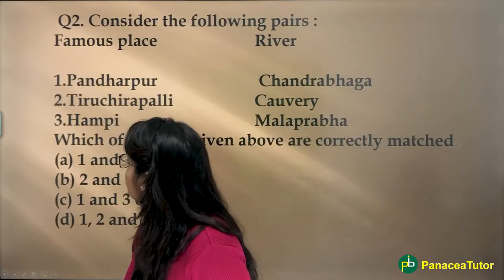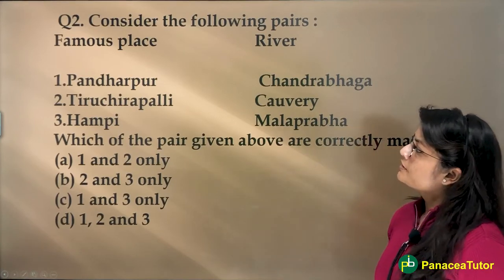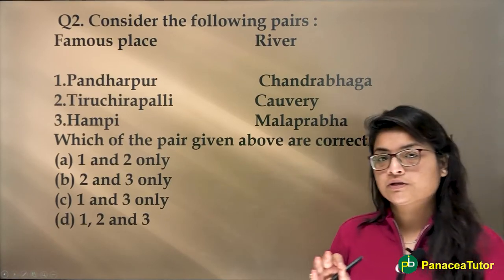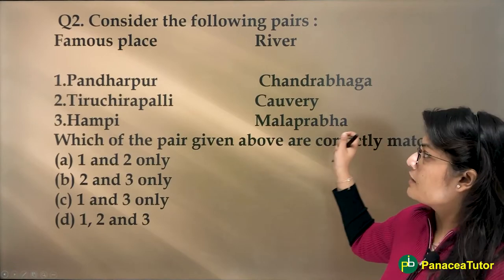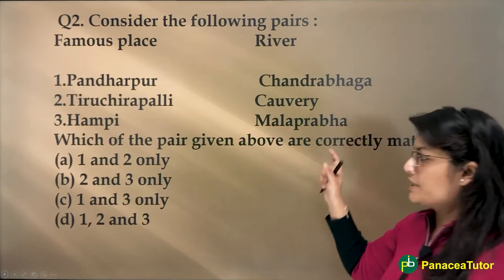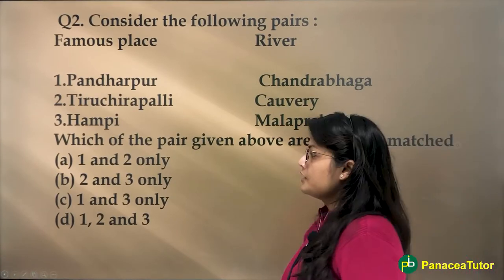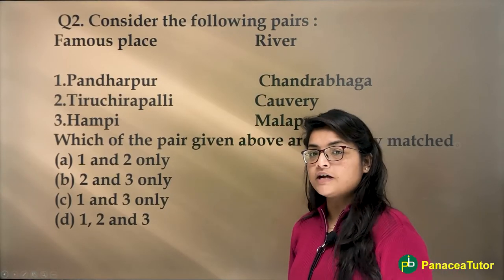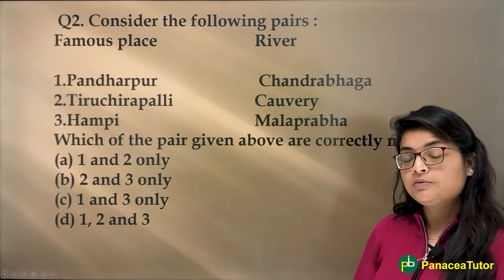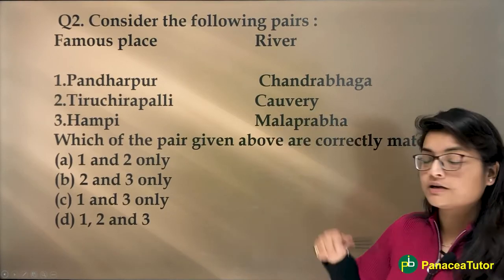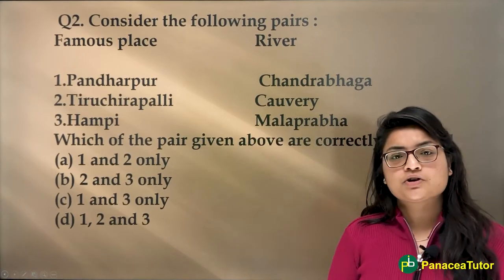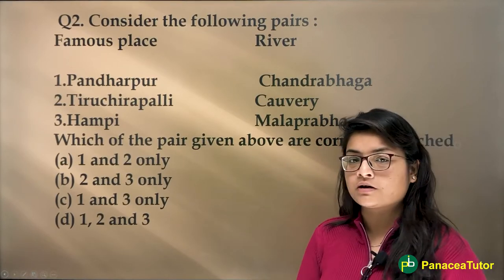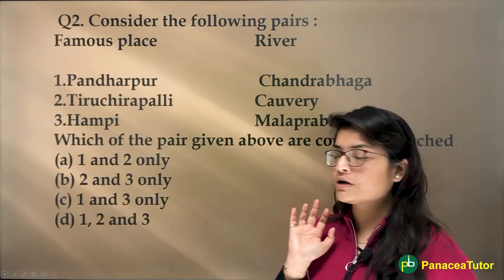Moving on to the next question: consider the following pairs of famous places and rivers. Pandarpur is paired with Chandrabhaga, Tiruchipali with Kaveri, and Hampi with Malprabha. Hampi is your ancient state — if you have read ancient history carefully, you would associate Hampi with a particular state and determine whether the river pairing is correct. Tiruchipali is definitely related to Kaveri river, and Pandarpur is in Maharashtra, related to Chandrabhaga. Options one and two are the correct answers.